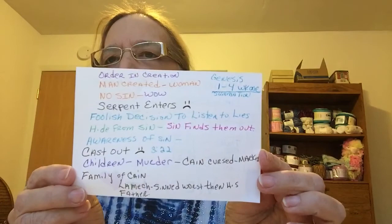And then prayer and application. To give you an idea of what I did, I went through and listed on one of my cards: order in creation, man created woman, no sin, serpent enters, foolish decision to listen to lies, hide from sin, sin finds them out, an awareness of sin, cast out of the garden, children murdered — Cain killed Abel — and then the family of Cain, and Lamech sinned worse than his father. So those were kind of my outline.